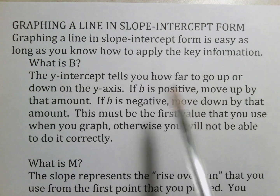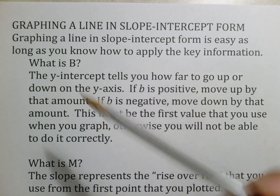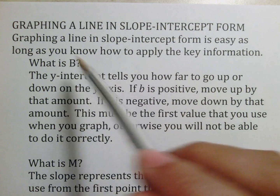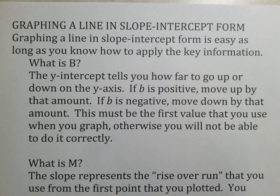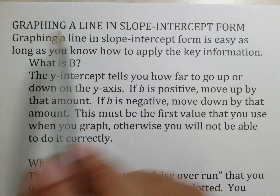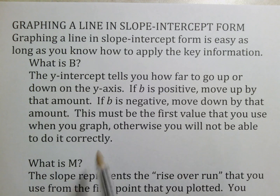The y-intercept tells you how far to go up or down on the y-axis. If b is positive, move up by that amount. If b is negative, move down by that amount. This must be the first thing you use when you graph, otherwise you won't do it correctly. Think of it this way: b alphabetically comes before m, so use b first, then m second. A lot of students do it wrong by going straight to m first — the first thing you want to do is identify b and plot it.